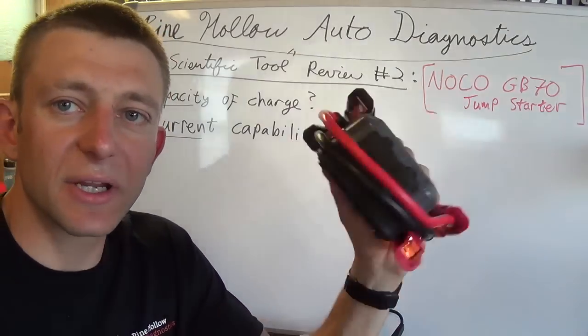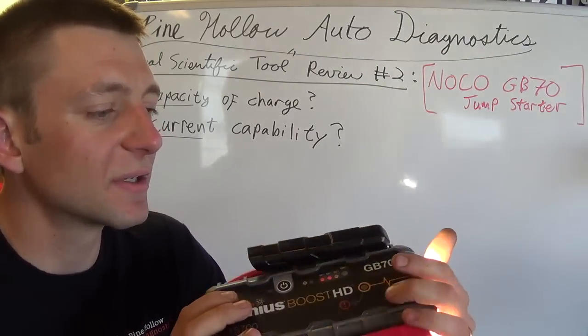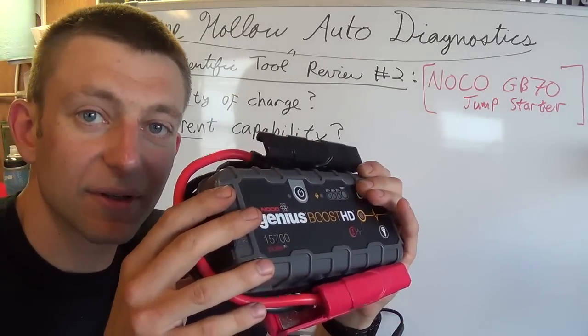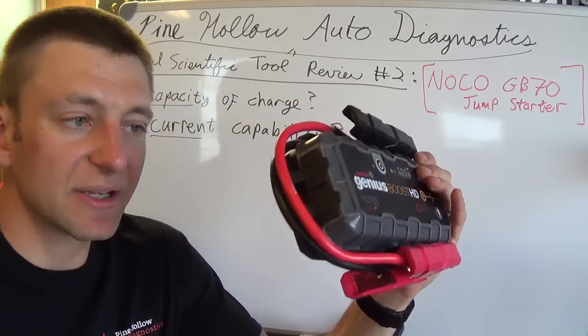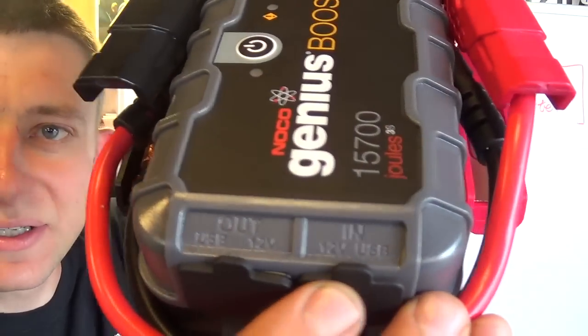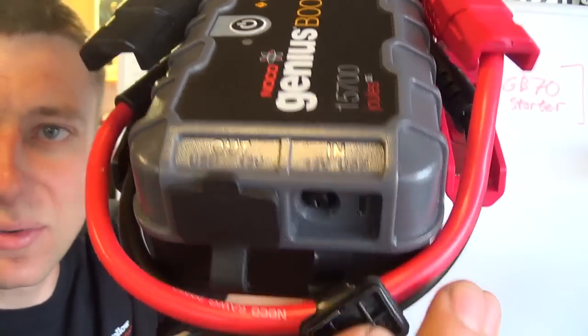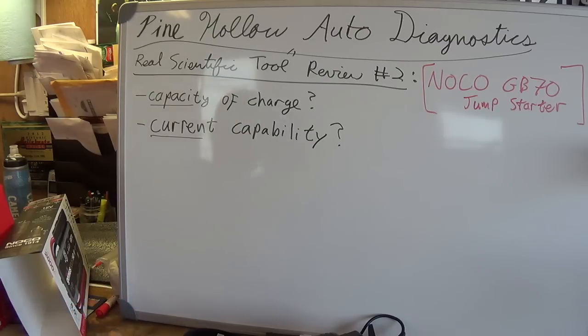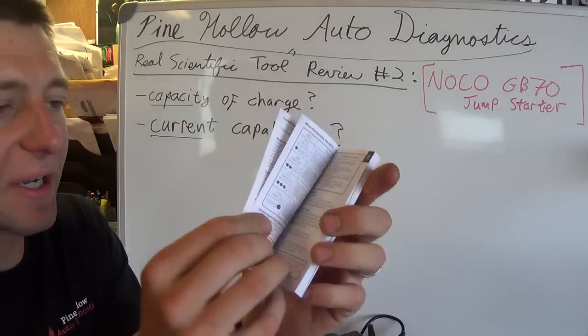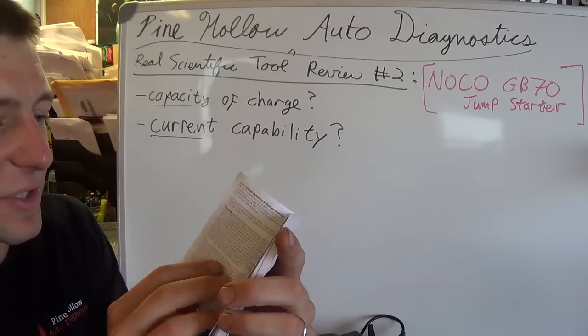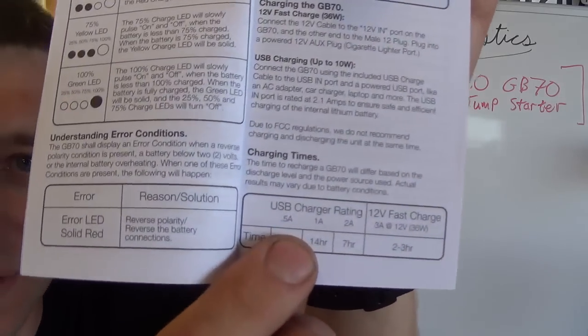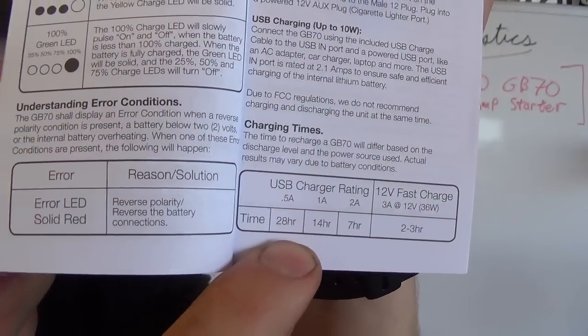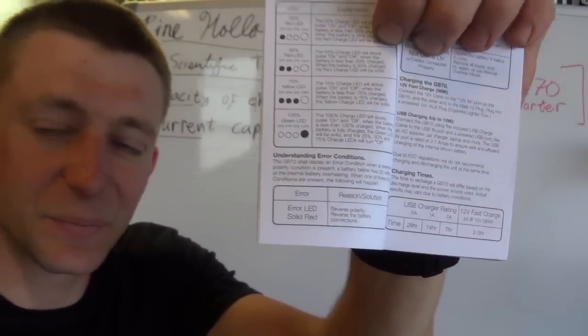So that's that. But first thing we've got to do is charge this thing up because it says before the first use charge it fully. Now the way to charge this, apparently it has two ways to charge it. Right here it says either through a USB cable or through a special plug. Now reading the user guide, the charging times, if you charge it through a USB cable depends on your amperage, but it can be up to 28 hours. So you're going to be there more than a day just charging your jump pack.